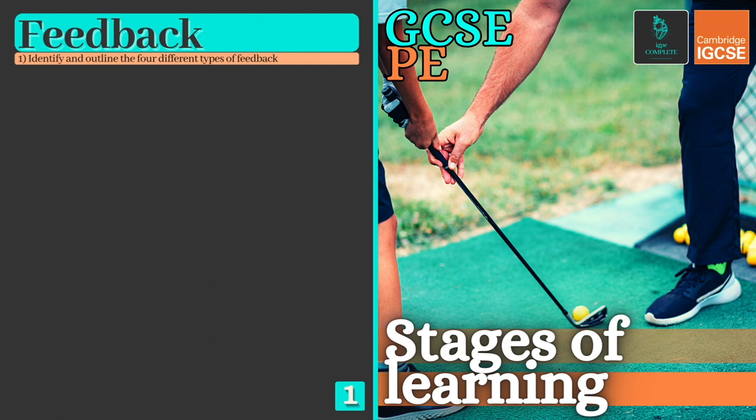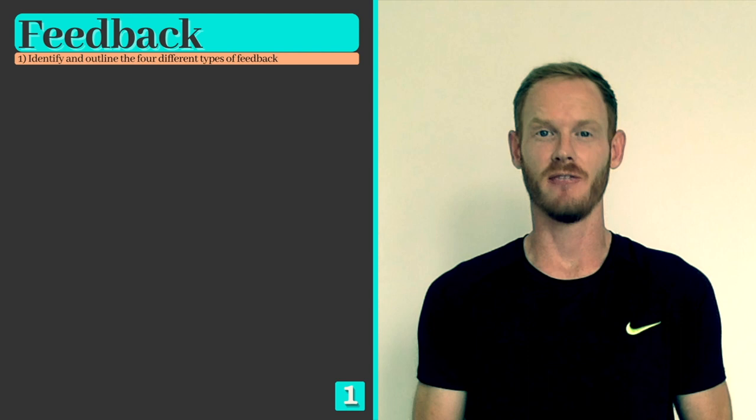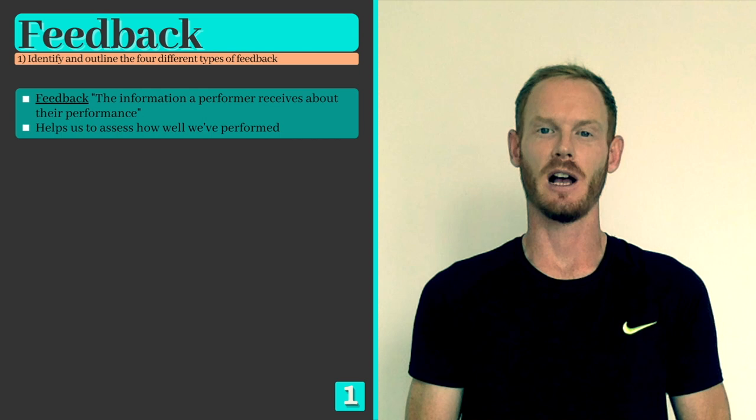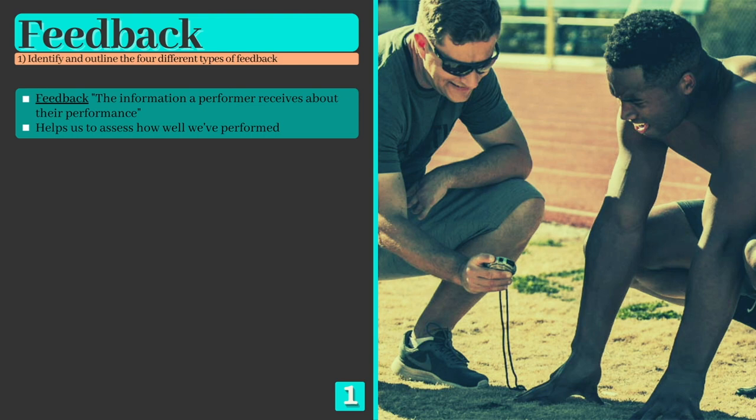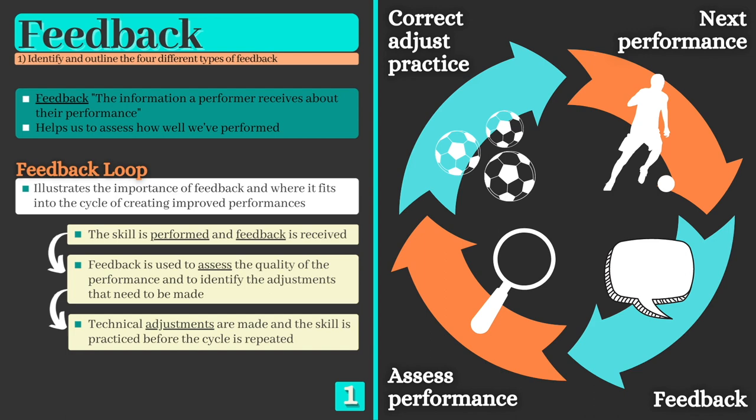Feedback is the information that a performer receives about their performance and is essential for helping us assess the quality of our actions. It can be given during or after a performance and can help us improve by showing us which skills and techniques we need to develop. The feedback loop illustrates the importance of feedback and where it fits into the cycle of creating improved performances, allowing us to assess our performances and make adjustments to become more effective in the future.